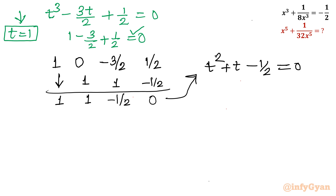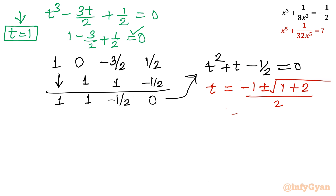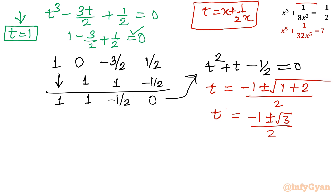Now we apply the Sridharacharya (quadratic) formula to t² + t - 1/2 = 0: t = (-1 ± √(1 + 2)) / 2 = (-1 ± √3) / 2. So the three values of t — that is, x + 1/(2x) — are t = 1 and t = (-1 ± √3)/2.